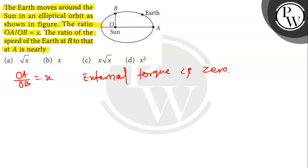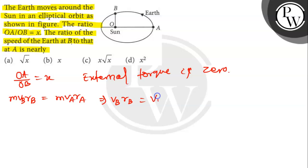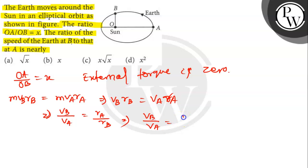From the law of conservation of angular momentum, the angular momentum of Earth at point B is equal to the angular momentum of Earth at point A. So M·VB·RB equals M·VA·RA, which gives VB·RB equals VA·RA, or VB by VA equals RA by RB, which is OA by OB. Since OA by OB equals X, we get VB by VA equals X.